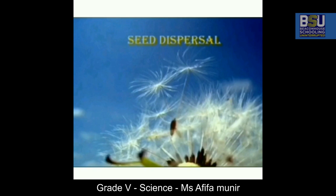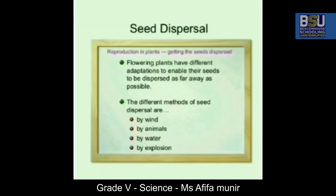Once the seed is formed inside the fruit, these seeds need to be dispersed — that is seed dispersal. There are different ways seeds can be dispersed: by wind, by animals, by water, and by explosion. We have studied these types in detail in previous lessons as well.